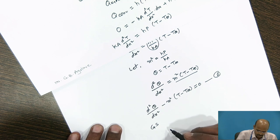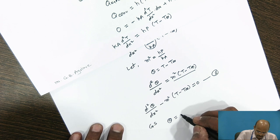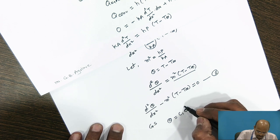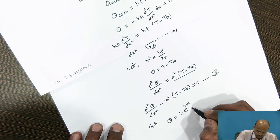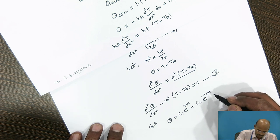The general solution we can write: θ is equal to c1 e^(mx) plus c2 e^(-mx).